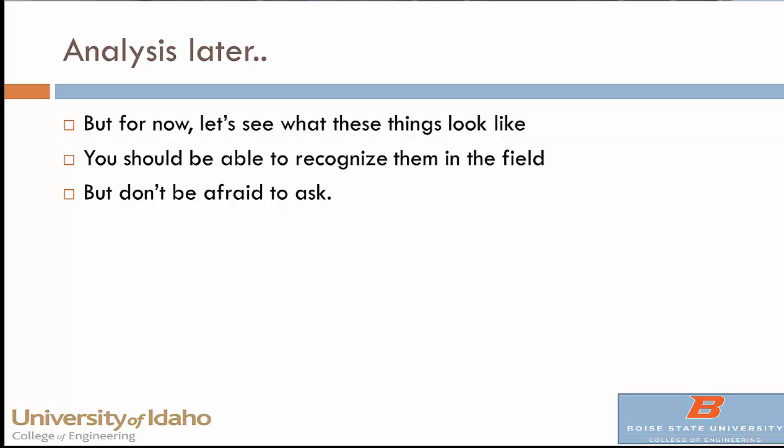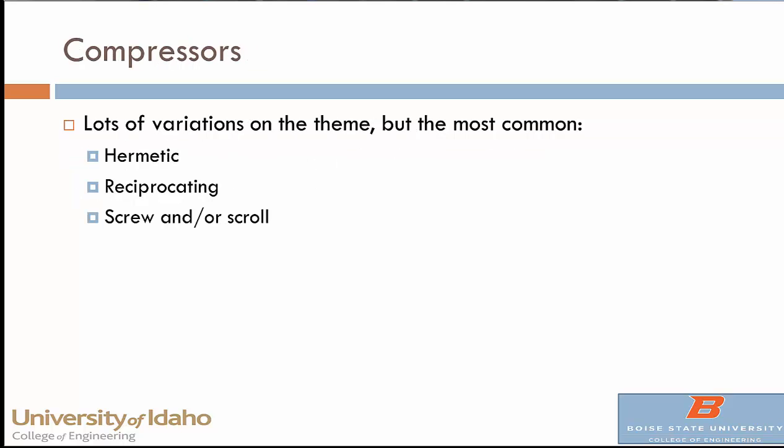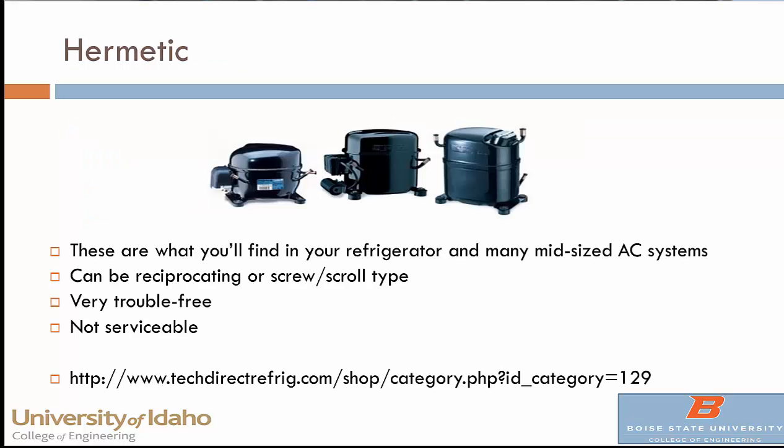Let's look at what these things look like — so far they've been blocks on generic diagrams, so let's look at some photographs. Starting with compressors: the hermetically sealed type is what you'll find in the back of your refrigerator or inside your air conditioner — a black cylinder with pipes sticking out. It contains oil and handles the compression all in one spot. Low-pressure, low-temperature vapor goes in; high-temperature, high-pressure vapor comes out. These are designed to last the lifetime of the device — 20, 30, or 40 years. The downside is they're not serviceable; when they go bad, you pull them out and put a new one in.